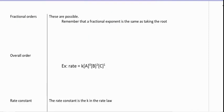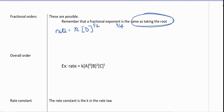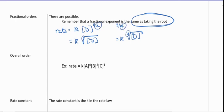Fractional orders are possible. We don't see them a lot, but we do see them — something like the rate equals K times the concentration raised to the one-half or three-fourths. Remember that raising something to a fraction is the same as taking a root. So one-half would be K times the square root of the concentration, and three-fourths would be K times the fourth root of the concentration cubed. The denominator tells us the root, and the numerator tells us the power.